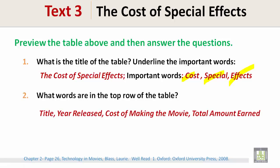What are the words in the top row of the table? Title, year released, cost of making the movie, and total amount earned.